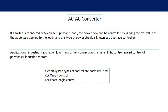If a switch is connected between the AC supply and load, the power flow can be controlled by varying the RMS value of the AC voltage applied to the load. This RMS value of AC voltage is controlled by controlling the firing and gating or switching pulses. This type of power circuit is known as an AC voltage regulator.